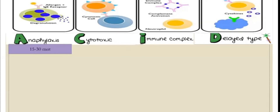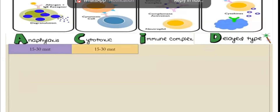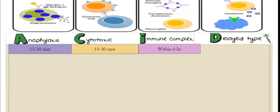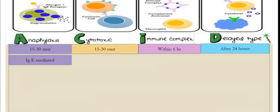In anaphylaxis, the Type 1 reaction starts within 15 to 30 minutes. The same applies to cytotoxic reactions. Immune complex reactions take longer — within 6 hours. The delayed type, as the name suggests, starts after 24 hours. So the first three are acute reactions, and the last one is a delayed reaction.